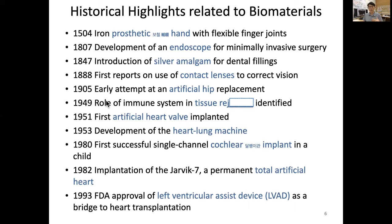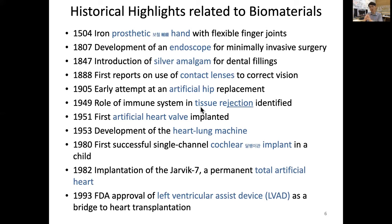Around 1949, the role of the immune system in tissue rejection was identified. Tissue rejection refers to what happens when an artificial biomaterial enters tissue and the immune system rejects it, or when an organ transplanted from another person is recognized as foreign and rejected by the host — which remains a big problem in organ transplantation.